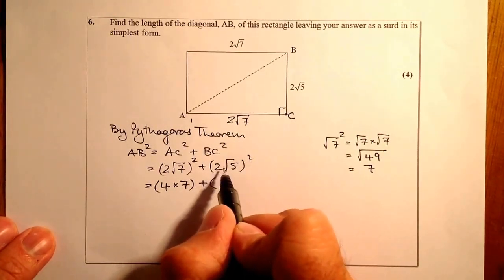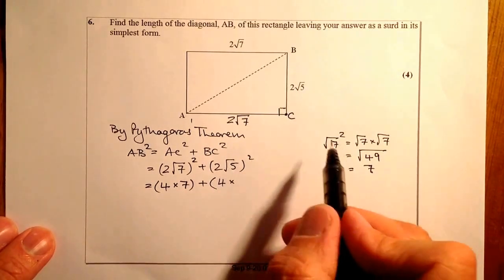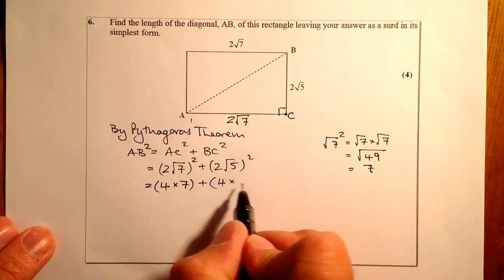Right, that's going to be plus and 2 squared again. It's going to be 4, and that's going to be times √5 squared. We'll go straight, same as we did here, to 5.